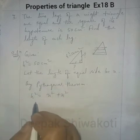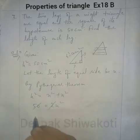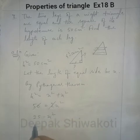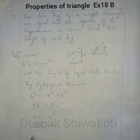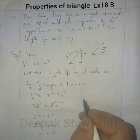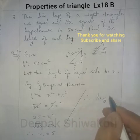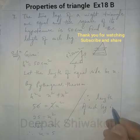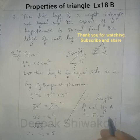So 50 equals 2x square, which gives x square equals 25. The square root of 25 is 5. Therefore x equals 5, meaning the length of each leg is 5 centimeters.